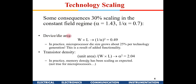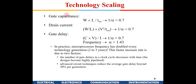Let's look at the consequences of scaling. Device die area is W × L, so the net gain is 1/α², meaning the area required for a particular circuit is reduced by a factor of 0.49. Transistor density increases by α², which is approximately 2.04, so we get an increase in transistor density with scaling.